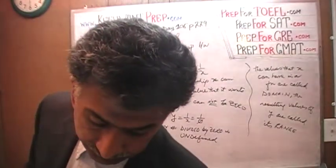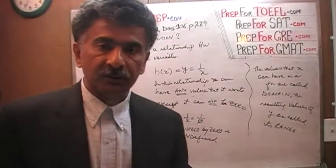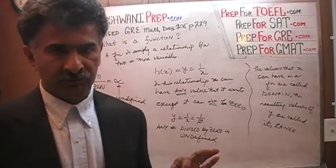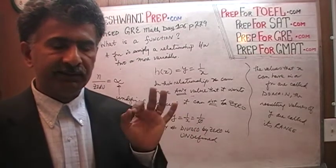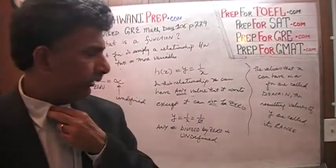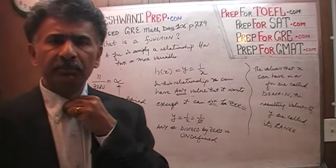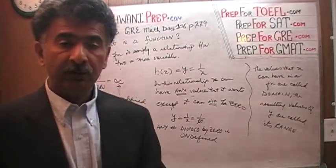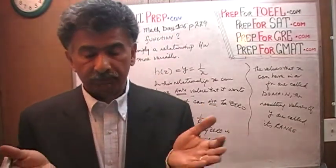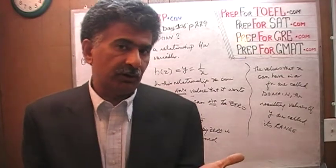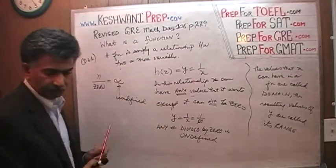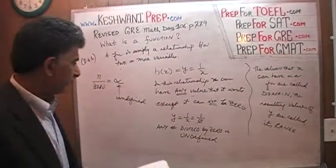I'm explaining the concepts of function, domain, and range in simplified terms — enough to get by on the exam. Mathematicians may disagree with some details, but what we're learning here is plenty good for the GRE. So far we've learned: f of x means there exists a relationship between x and y called f; g of x is a different relationship called g; and if a function has a denominator, x cannot make it zero.